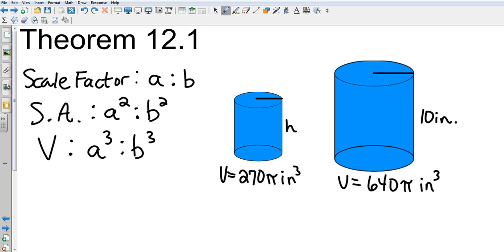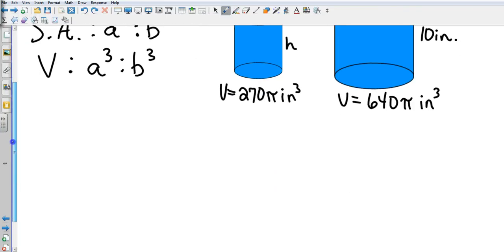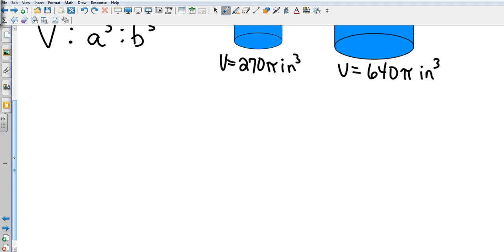So we're going to use that information to find the missing height of these two cylinders. The first thing we want to do is notice that they gave us the volume, so we're going to compare the volume, and that's going to be 270π to 640π.